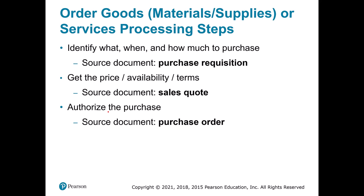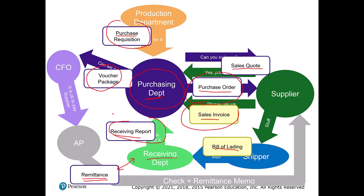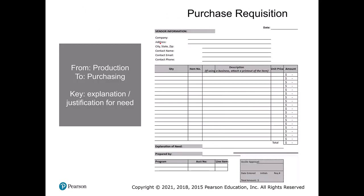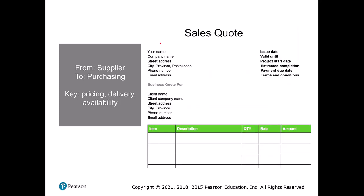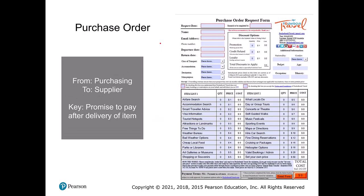Looking at the individual source documents: the purchase requisition specifies what, when, and how much to purchase. A sales quote gives price, availability, and terms. The purchase order actually authorizes the purchase. A purchase requisition is sent from production to purchasing stating what they need and when. A sales quote comes from the supplier to the purchasing department showing what's available and at what price. A purchase order goes from purchasing to the supplier as our promise to pay, and the supplier's revenue cycle is supposed to match up with what they can actually fulfill.